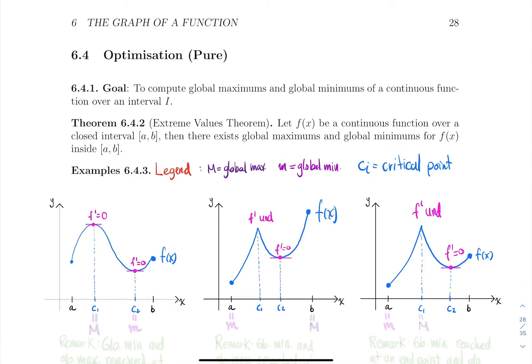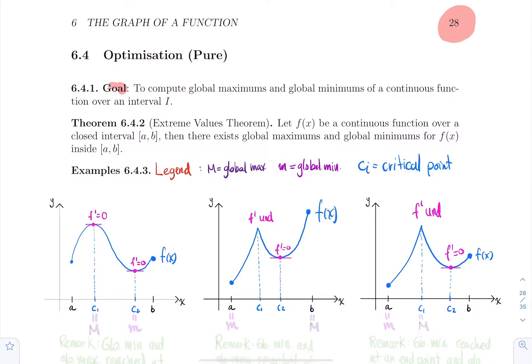Hello, everyone, and welcome to section 6.4, where we will optimize a function. The goal of this section is to find global maximums and global minimums of functions that are continuous over intervals.